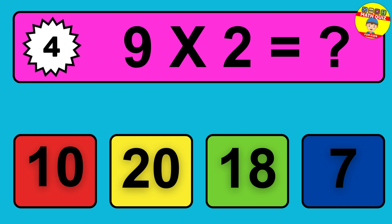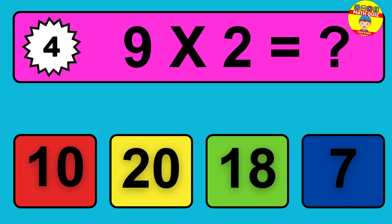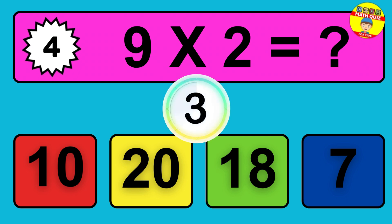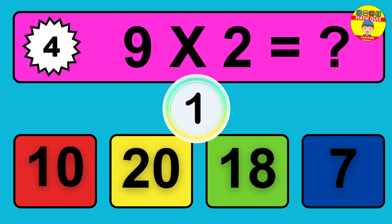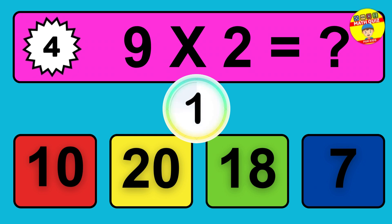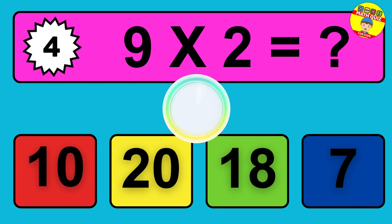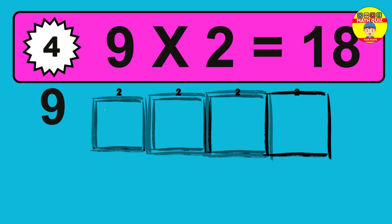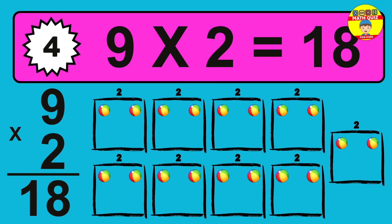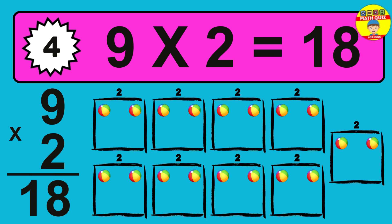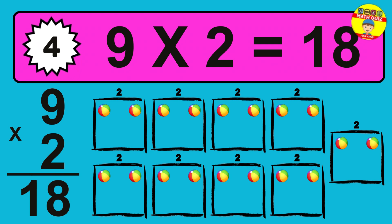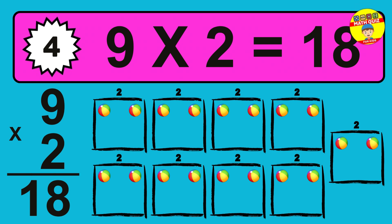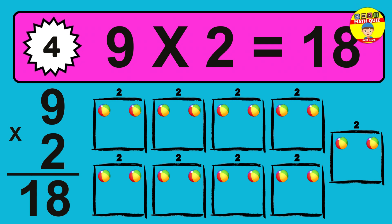Question 4. 9 times 2 equals what? So the answer is 9 times 2 is 18. To calculate, we have 9 groups with 2 balls each one. So how many balls do we have? 18 balls.